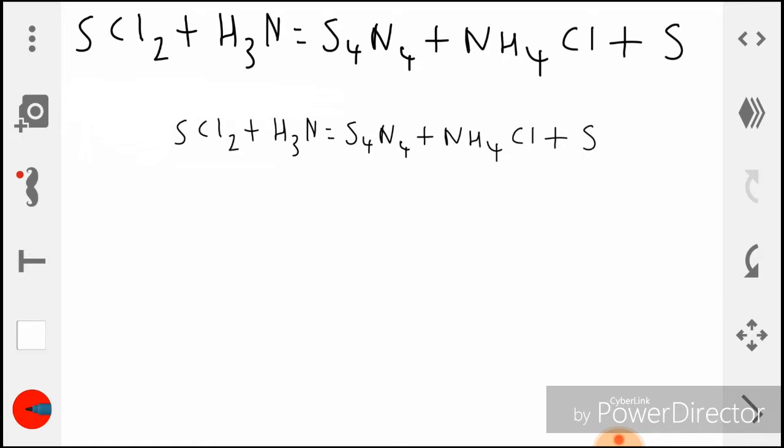So there's SCl2 + H3N = S4N4 + NH4Cl + S. That's the equation and it's not balanced as you can see.